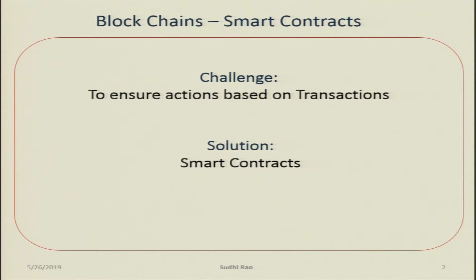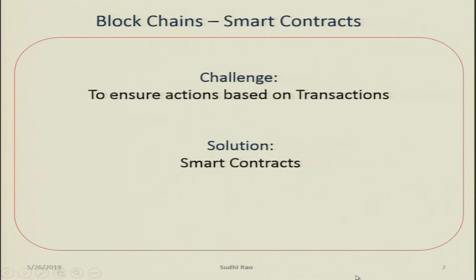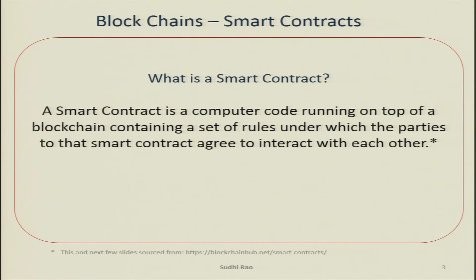If I buy a pizza from you, the entry that I transferred 0.1 of a cryptocurrency can be made into the blockchain, but it does not have a linkage to the outside world to make sure that the pizza is delivered to me and only then money is deposited into your account. Smart contracts are the solution to this challenge — ensuring that actions are based on transactions.